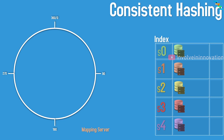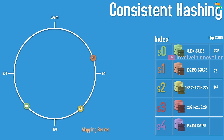Let's say we have five servers. We hash the server IDs (using their IP addresses) with a hash function, then take modulo 360 to get an angle. For example, server 0's IP hashes to angle 225, placed at that point on the circle. Server 1 maps to angle 75, server 2 to angle 147, server 3 to angle 349, and server 4 to angle 285. Now all servers are mapped onto the ring.